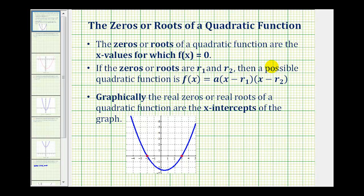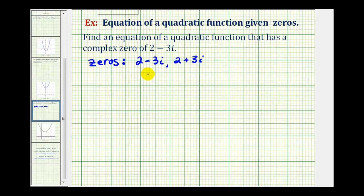One last comment: if the given zeros are real zeros and we graph the quadratic function, the x-intercepts will be the zeros of the function. Since we have complex zeros, if we graph the function, it will not intersect the x-axis.